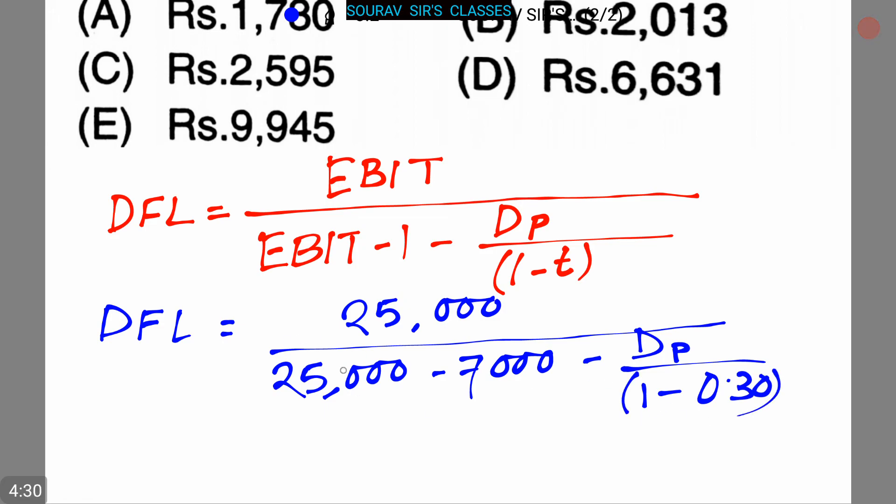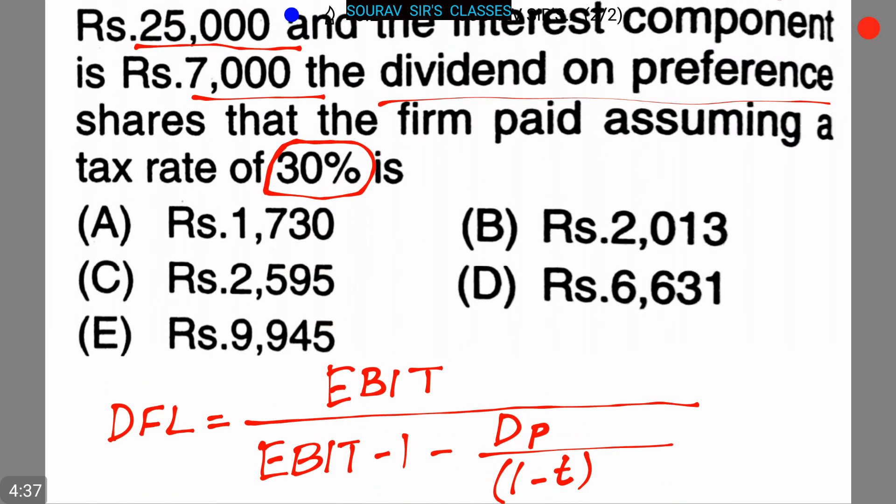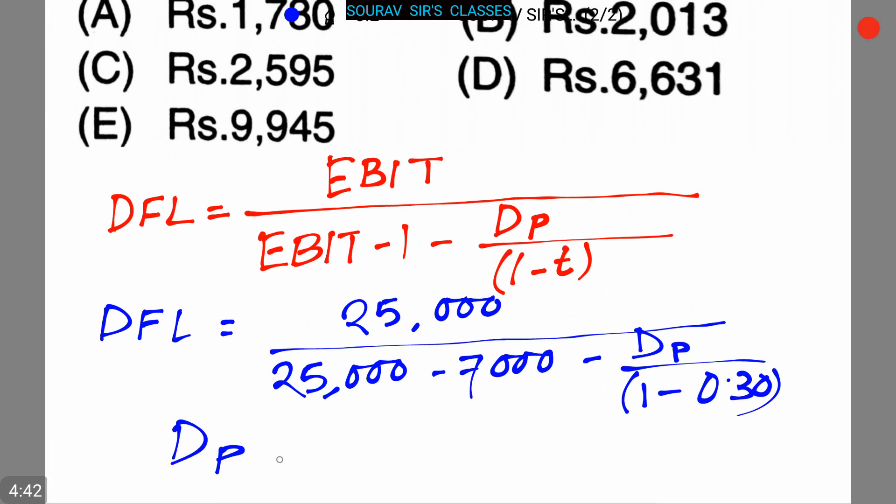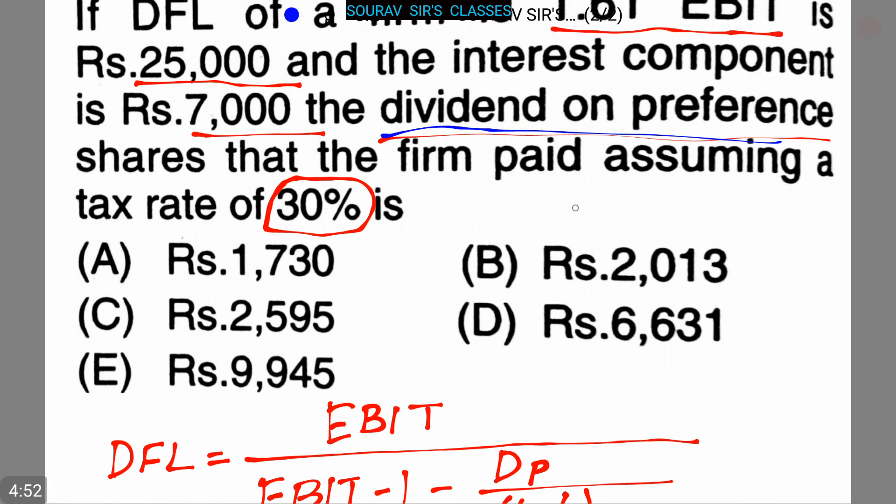Now solving this, we can get DP, that is the dividend on preference, equals to 1,730. So the dividend on preference shares that the firm paid assuming a tax rate of 30% is 1,730, that is option A. Option A is our answer.